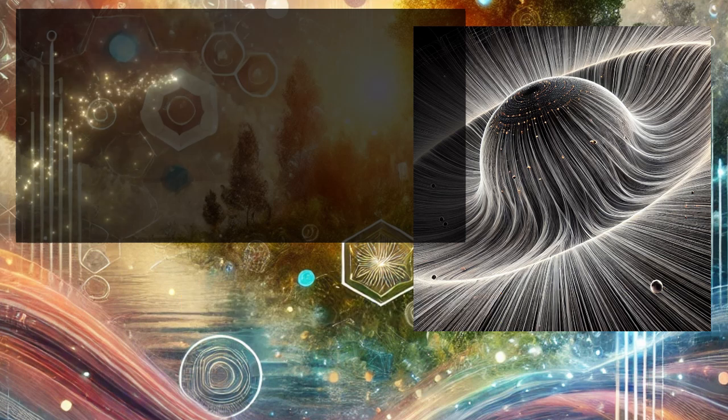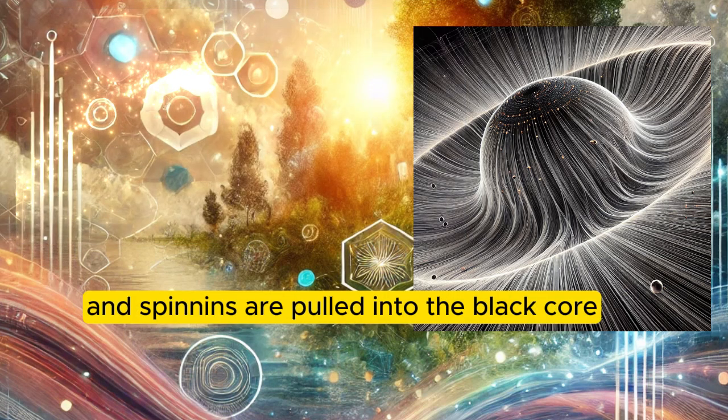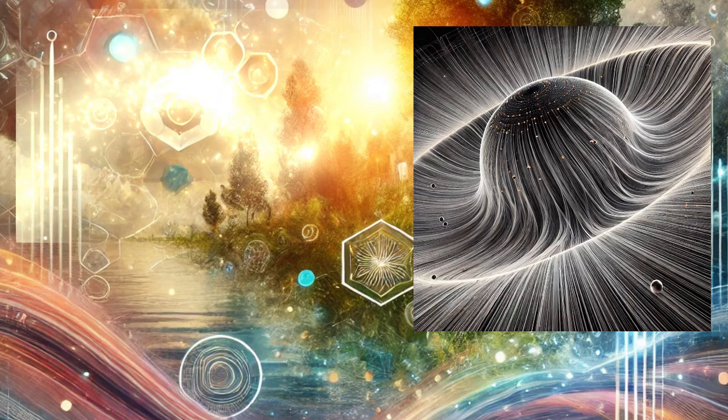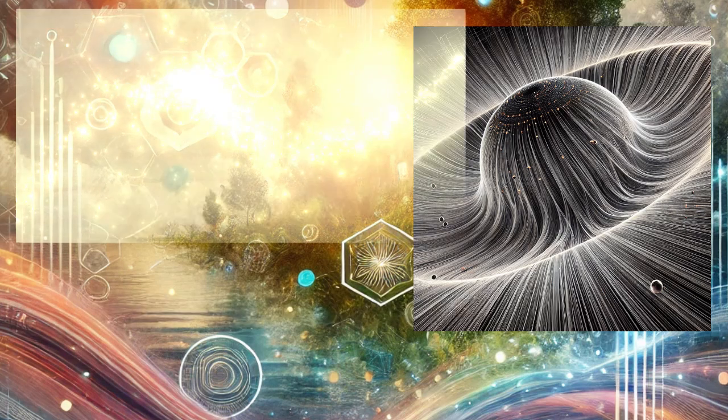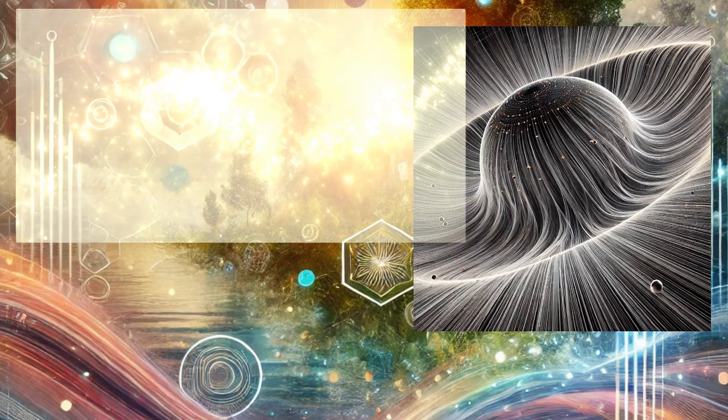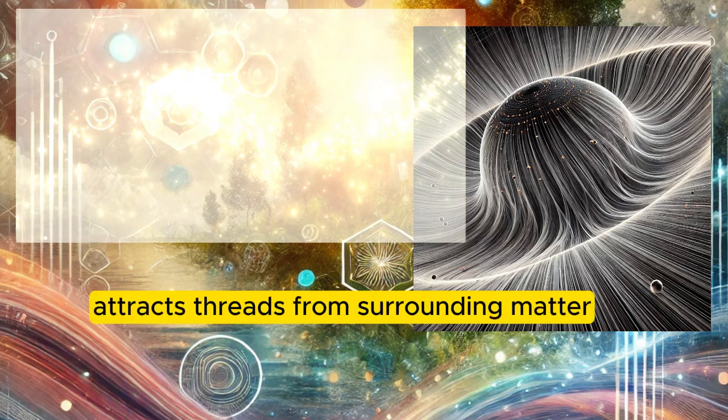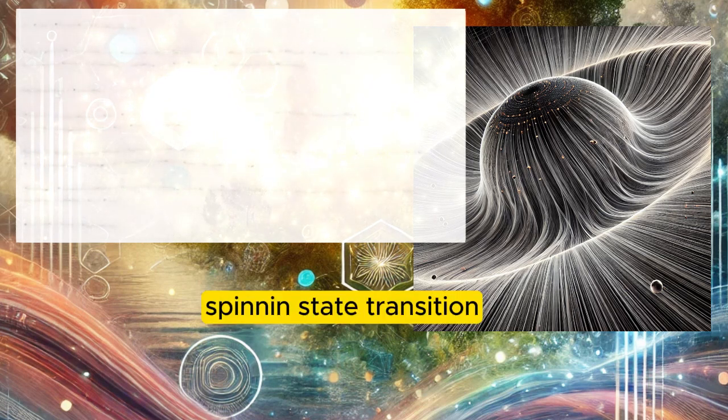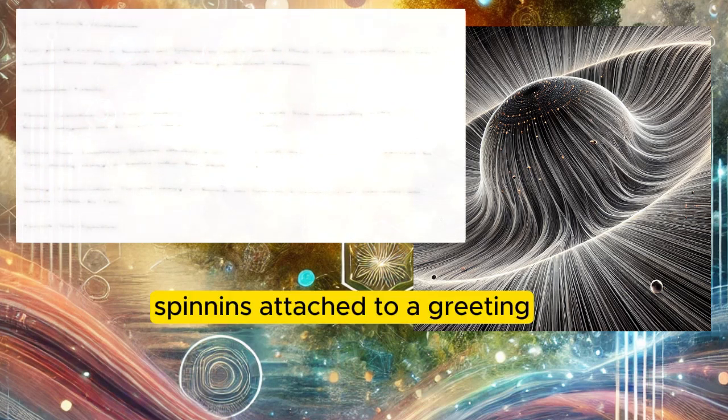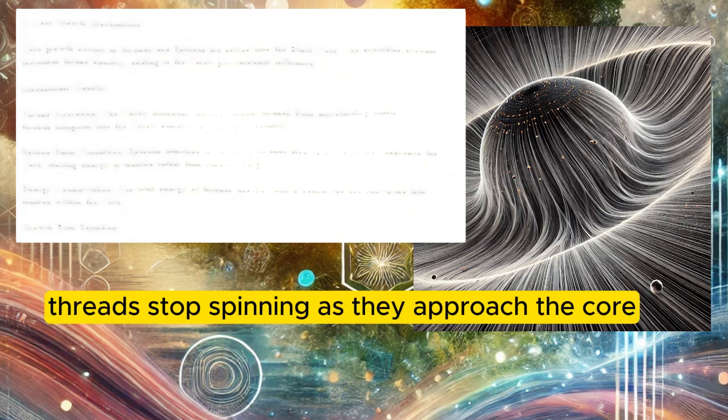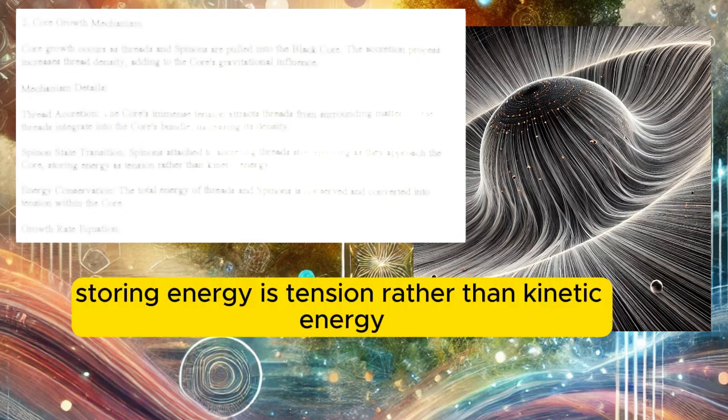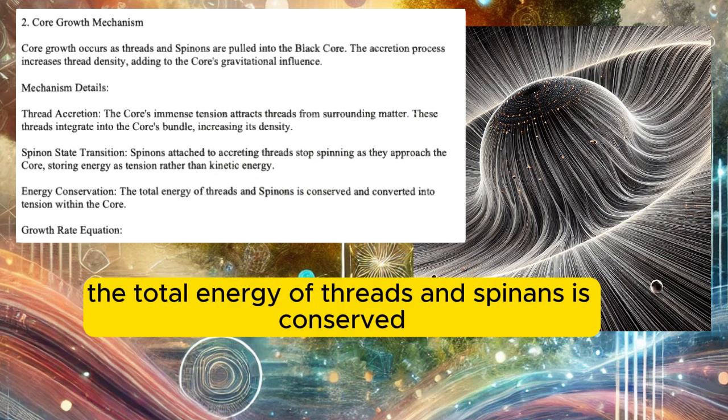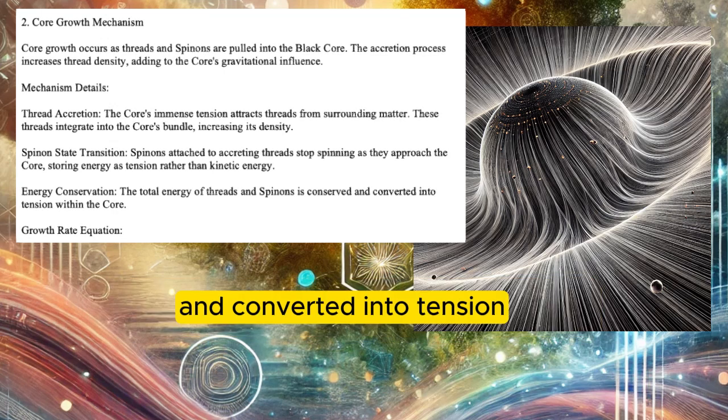Core growth mechanism. Core growth occurs as threads and spin-ins are pulled into the black core. The accretion process increases thread density, adding to the core's gravitational influence. Thread accretion: the core's immense tension attracts threads from surrounding matter. These threads integrate into the core's bundle, increasing its density. Spin-in state transition: spin-ins attached to accreting threads stop spinning as they approach the core, storing energy as tension rather than kinetic energy. Energy conservation: the total energy of threads and spin-ins is conserved and converted into tension within the core.